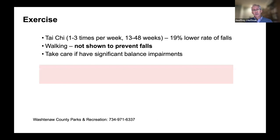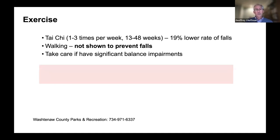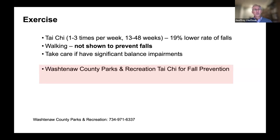Tai Chi is one example that really works to lower fall rates by working on balance, coordination, and muscle balance. That said, walking — though a preferred activity with cardiovascular benefits — has not actually been shown to prevent falls. I'd really like to highlight this: there are a number of multi-component exercise programs that work, but walking alone has not been shown by the evidence base to reduce fall risk. And for those with significant balance impairments, exercise should be done with great care.